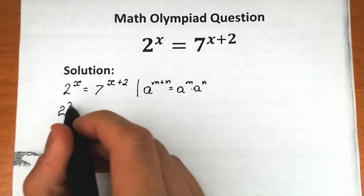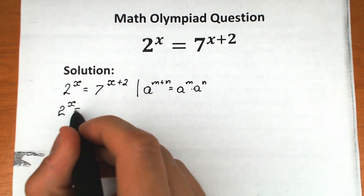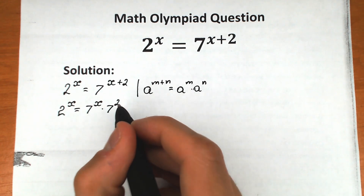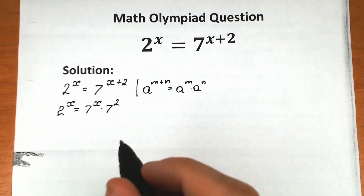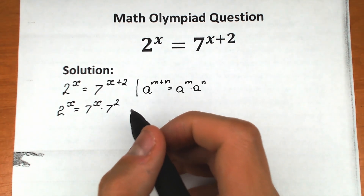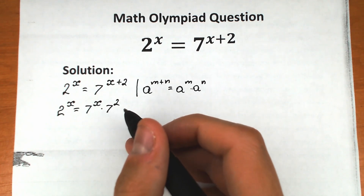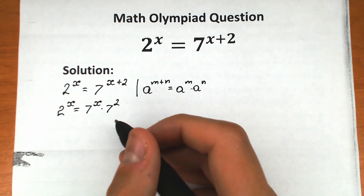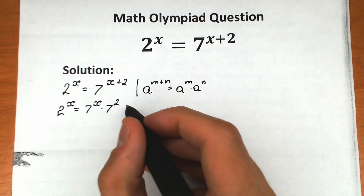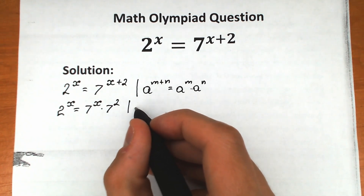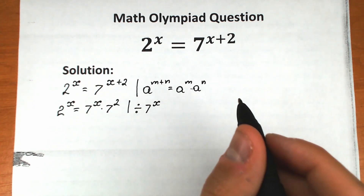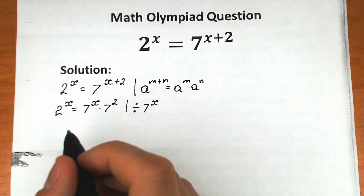So we have 2 to the power x equal to 7 to the power x times 7 squared. Now, what we're going to do next is divide both sides by 7 to the power x. I want to group our x terms on the left-hand side and the constant on the right-hand side. This is a really important step.